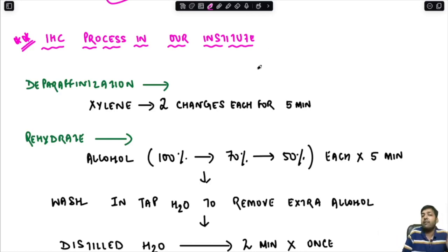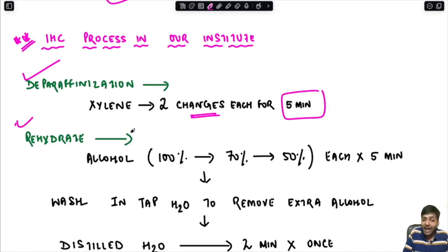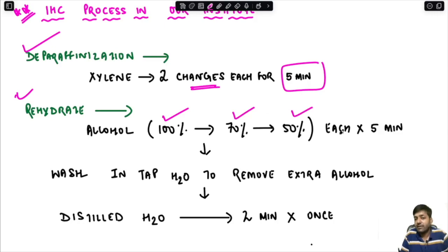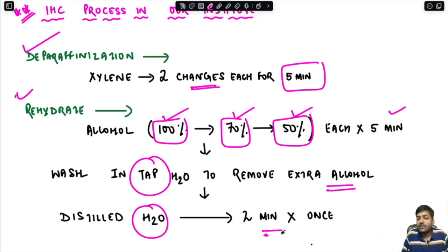You have taken the formalin-fixed paraffin-embedded tissue and cut the sections. First, you deparaffinize: put in xylene, two changes, each for five minutes. Then rehydrate: 100% alcohol, then 70%, then 50%, each for five minutes. Then wash in tap water to remove excess alcohol, followed by a wash in distilled water for two minutes.